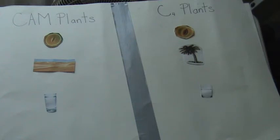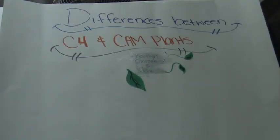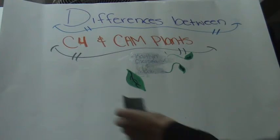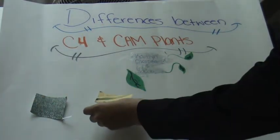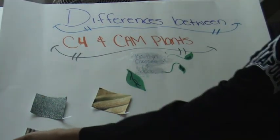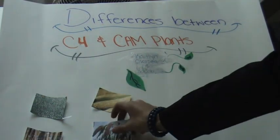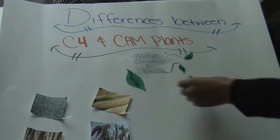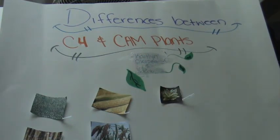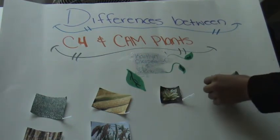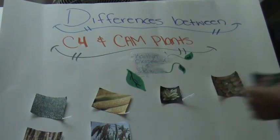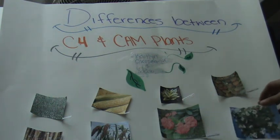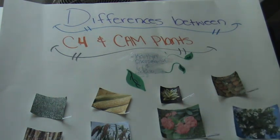Here are some examples of each. For C4 plants, we have crabgrass, corn, sugarcane, and sorghum. For CAM plants, we have sansevierias, pineapples, euphorbias, and crassula argenta.